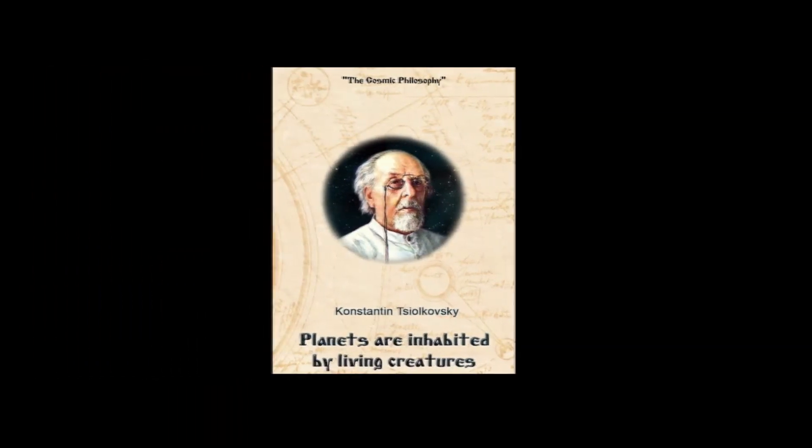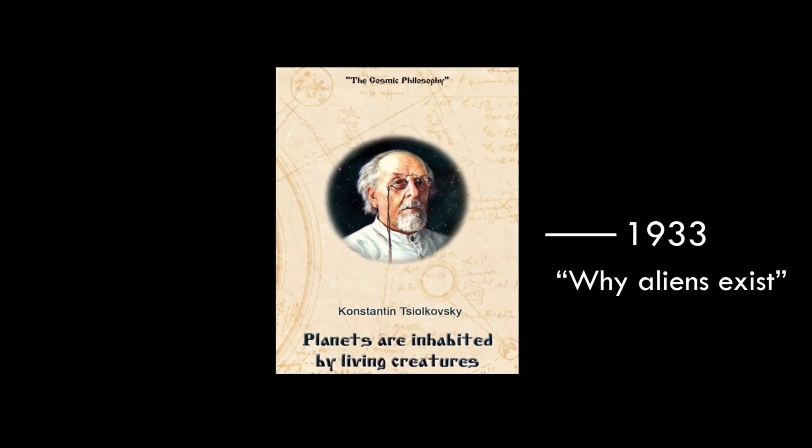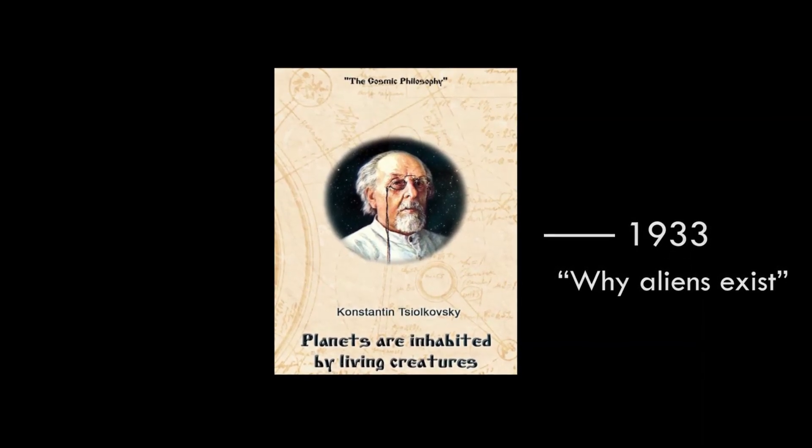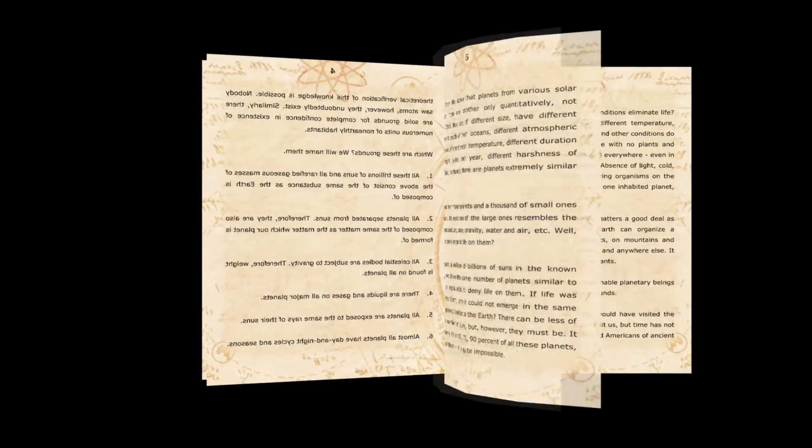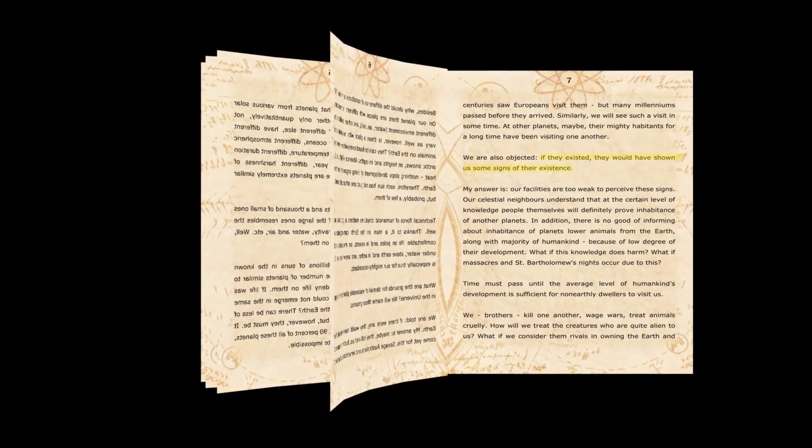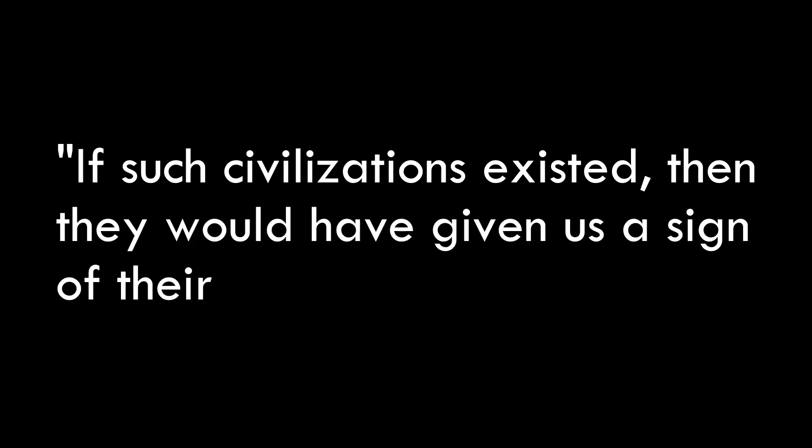In an unpublished manuscript made in 1933, before the paradox even came to fruition, the Russian physicist Konstantin Tsiolkovsky noted two reasons for why people deny the existence of external life. If such beings exist, they would have visited Earth, and if such civilizations existed then they would have given us some signs of their existence.